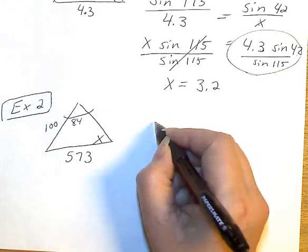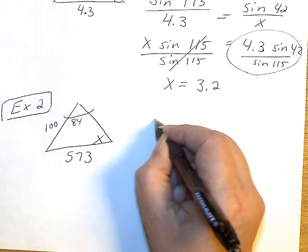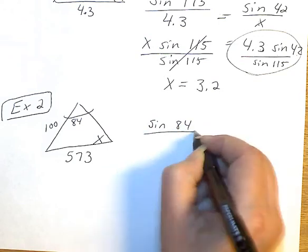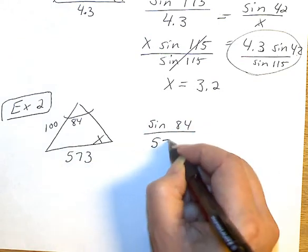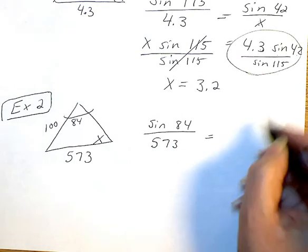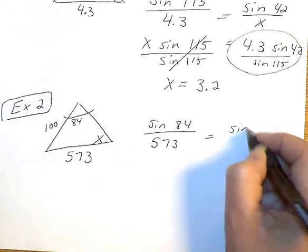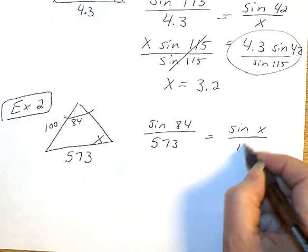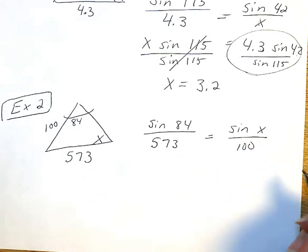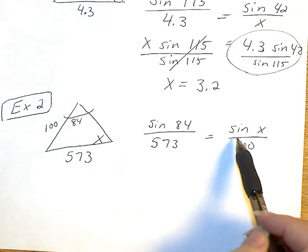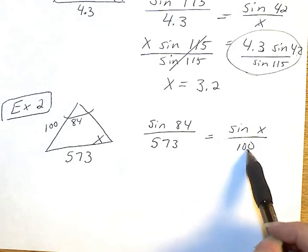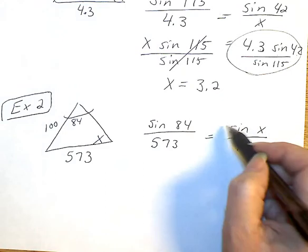Hopefully you got sine of 84 over 573 is equal to sine X over 100. Now, because I want to get this by itself, I just want to get rid of 100. So I can multiply both sides by 100.